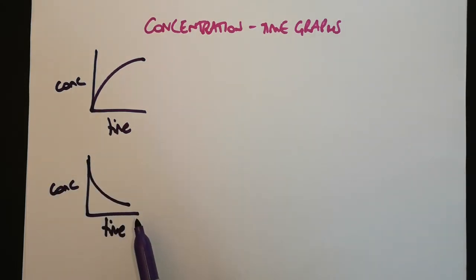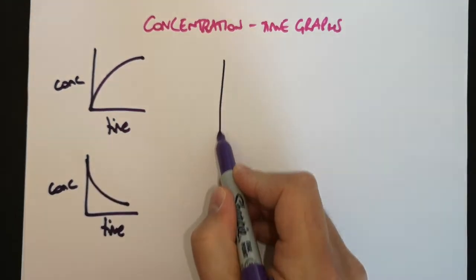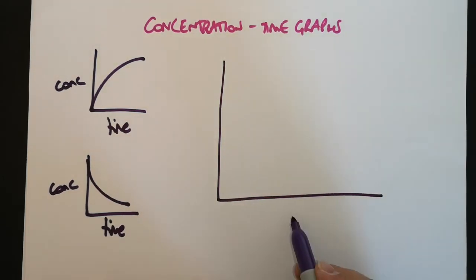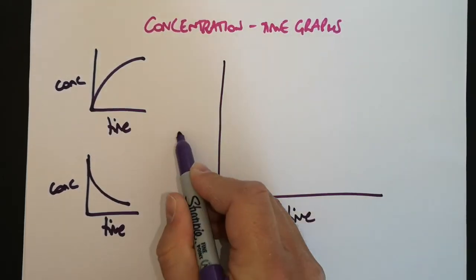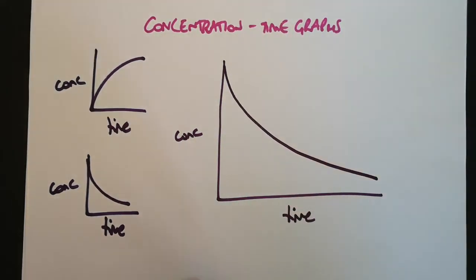But actually this is specifically for a first-order reagent. We've not looked at previously zero orders or second orders. So now what we need to do is look at how that would be different if we had those reagents. So let's say we have a concentration-time graph and we had a first-order reagent on there that looks a bit like that.